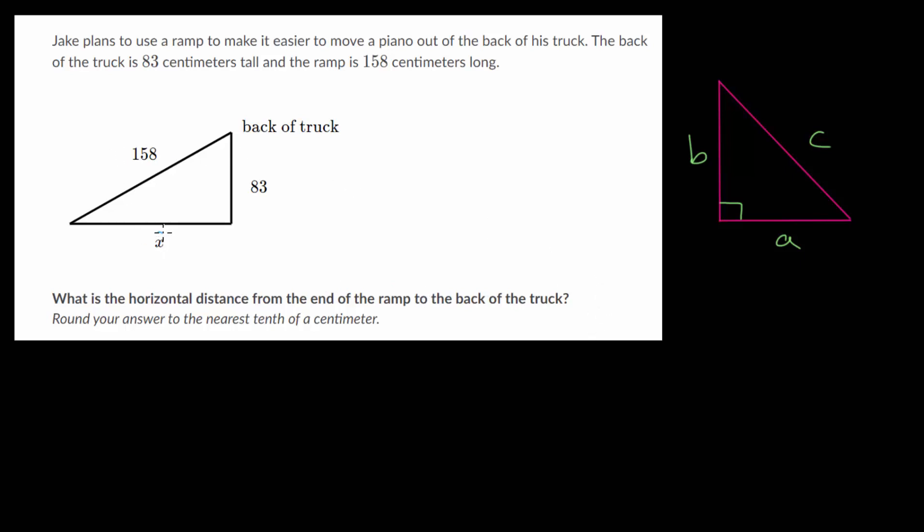So that is this missing distance here which we can call x and that will be at a right angle to the back of the truck. So basically this is our ground here, this is the back side of the truck, and then this is the ramp that the piano is going to be moved on.